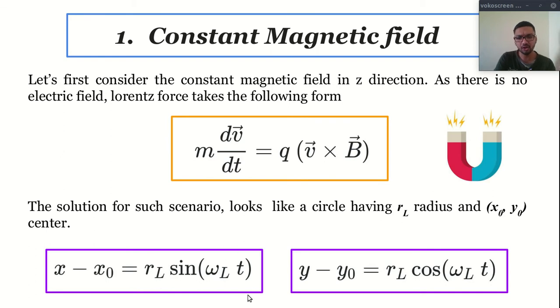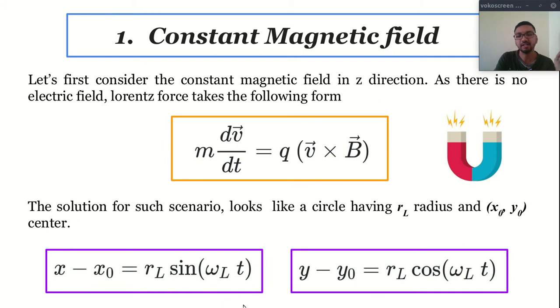What is this R_L? R_L is the Larmor radius. And you may also find this strange term omega C — by the way, this is omega C, not omega L; that was a typo error. This omega C is the cyclotron frequency.